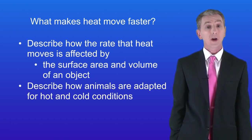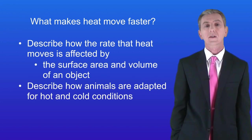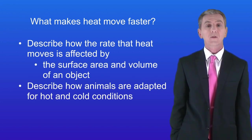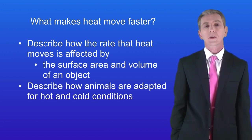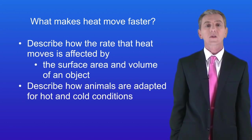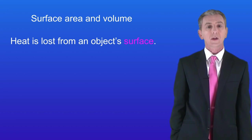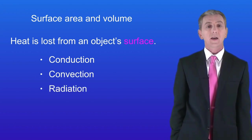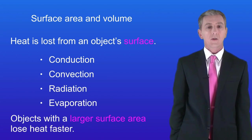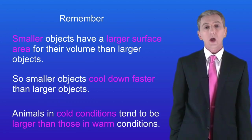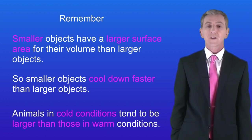By the end of this video you should be able to describe how the rate that heat moves is affected by the surface area and volume of an object, and describe how animals are adapted for hot and cold conditions. Remember that heat is lost from an object's surface and can be lost by conduction, convection, radiation and evaporation. Objects with a larger surface area lose heat faster than those with a smaller surface area. Here's a key fact: smaller objects have a larger surface area for their volume than larger objects, so smaller objects cool down faster than larger objects.